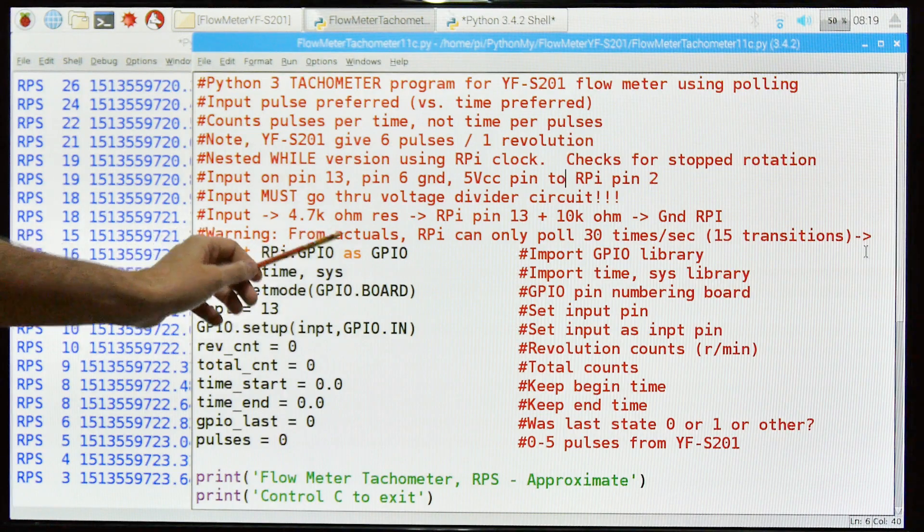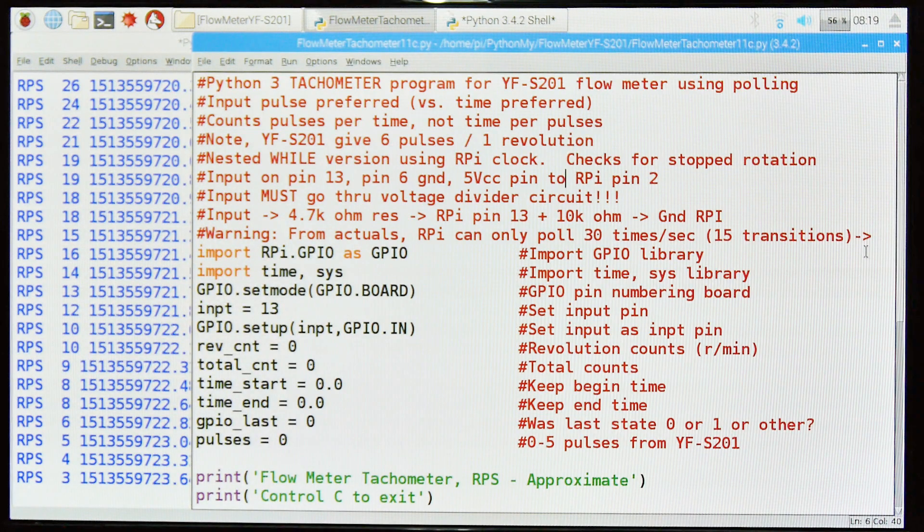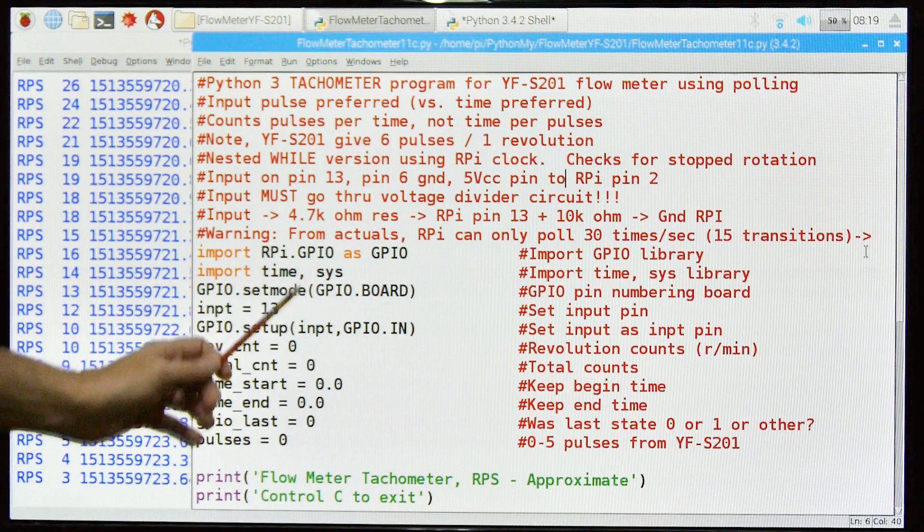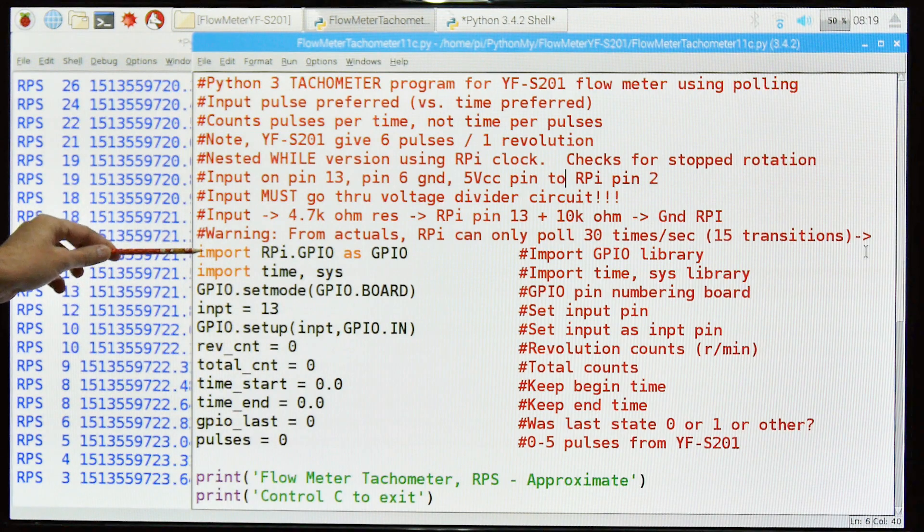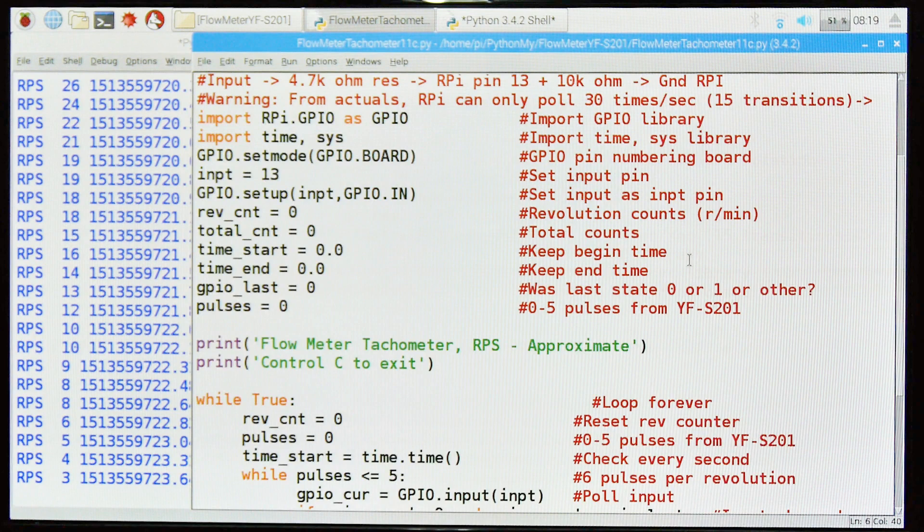From actual experience, the RPI can only poll 30 times a second, about 15 transitions from north-south. So you have to watch that because if you overspeed your device that you're measuring, your RPI will no longer be able to measure accurately. Let's go down and look at the code, the stuff that's actually doing stuff.